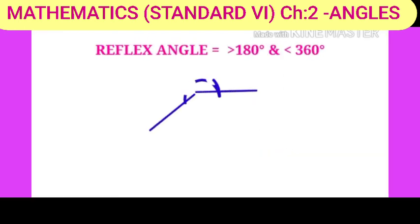Reflex angle means when it goes more than 180 degree angle, means when one of the arms turns even further, means more than 180 degrees. This angle is greater than 180 degrees. Such an angle is called a Reflex Angle. A reflex angle is greater than 180 degrees and less than 360 degrees.